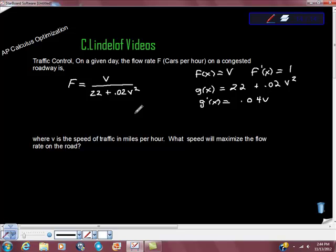Okay, so now I'm going to plug this into the quotient rule, and the quotient rule says that we get G of X, so we get 22 plus .02 V squared times F prime of X, which is just 1, minus F of X, which is V, times the derivative here, which is .04 V. And then we get that all over G of X squared, so that's 22 plus .02 V squared quantity squared.